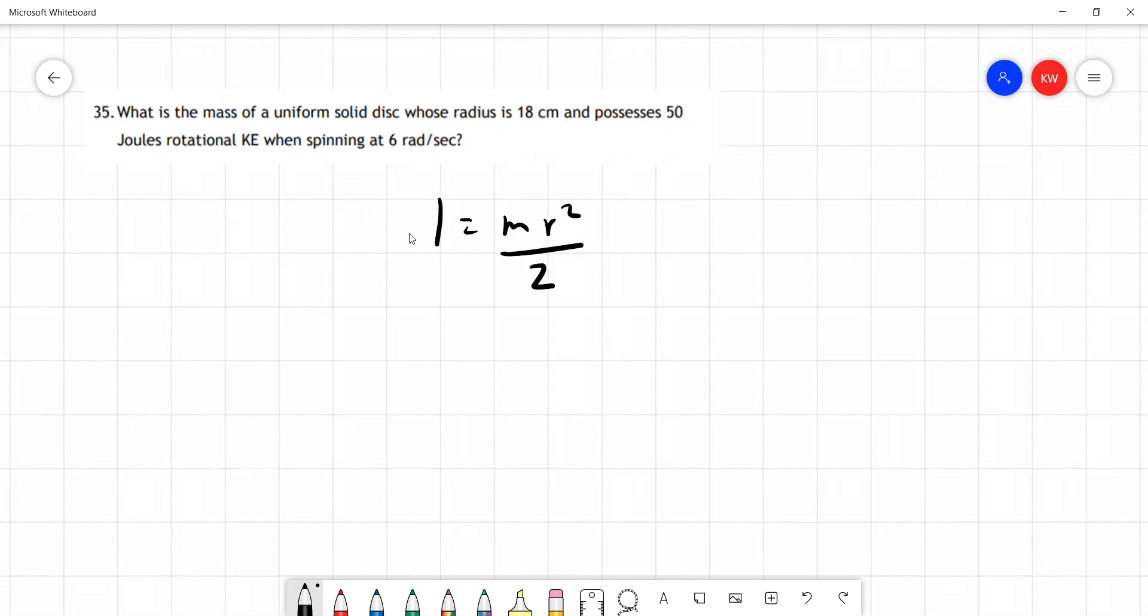However, although we have the radius, we don't have the moment of inertia so we need to find that first. There's another formula we can use involving moment of inertia which is this one here. The rotational kinetic energy is equal to half times moment of inertia times omega squared. Here we do know the rotational kinetic energy and we do know omega. We can use these values first of all to find I and that's how we're going to solve this question.